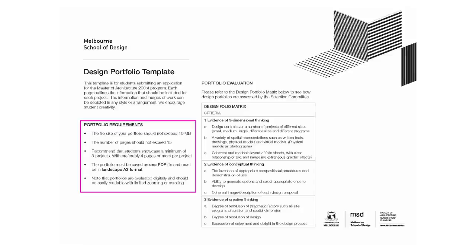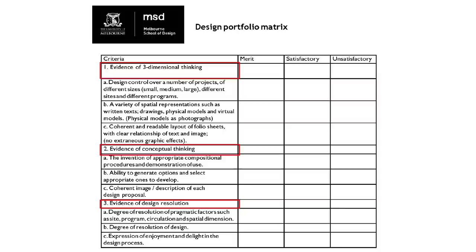There are three criteria we use to assess your portfolio. The first is evidence of three-dimensional thinking — that doesn't just mean funky forms. It covers everything from planning: whether you can think three-dimensionally in planning terms, how you plan the building. If you show a plan that doesn't work, make sure you rework it before submitting. We're also looking for variation of scale of projects across different design studios and sites, and coherency and readability of layout — that's what we mean by professionalism.